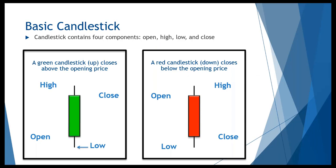There are basically four components to a candle: the high, the low, the opening, and the close. These are referred to as candle lines — important data points. The area between the open and close is referred to as the real body. An up candle, where price moves higher, is represented by a green candle, and a down candle is represented by a red candle — because price opens and closes higher for green, and opens higher and closes lower for red.